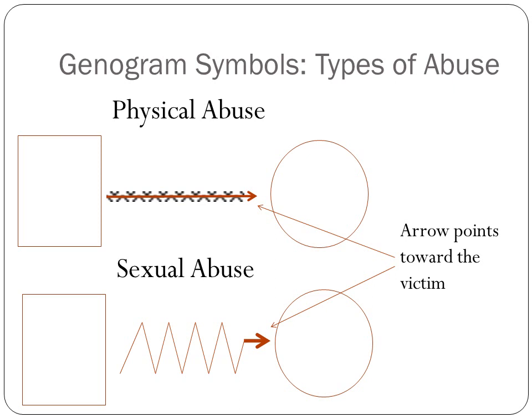We also want to depict types of abuse that have occurred on the genogram assignment. To denote physical abuse, we draw a straight line towards the victim — the arrow always points to the victim, the receiver of the abuse. In the physical abuse example, the line starts at the square and points to the circle, so the male is the abuser and the female is the victim. To denote physical abuse specifically, we put little half triangles — little V's — coming off the top and bottom of the line.